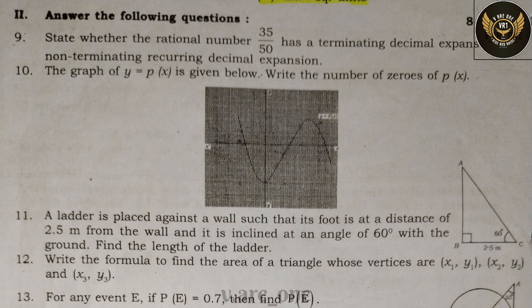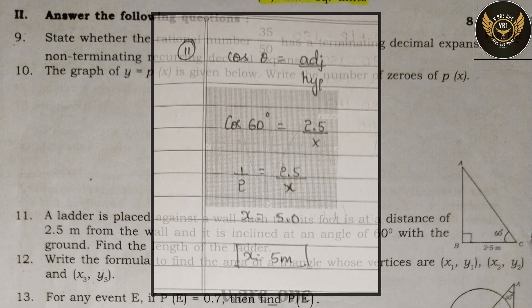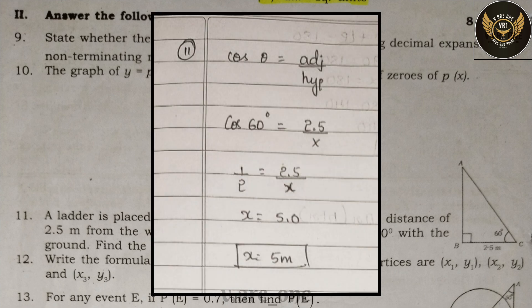Eleventh one: a ladder is placed against the wall such that its foot is at a distance of 2.5 meters from the wall, and it is inclined at an angle of 60° with the ground. Find the length of the ladder. The length of the ladder is 5 meters.